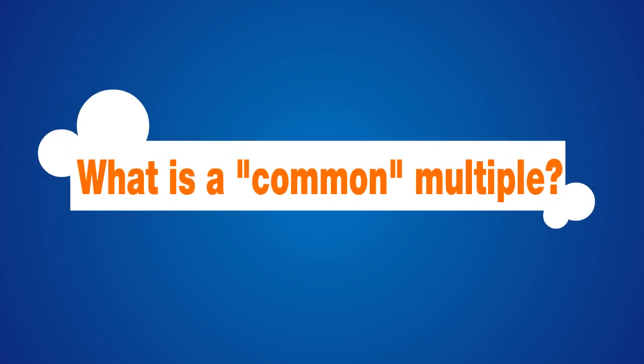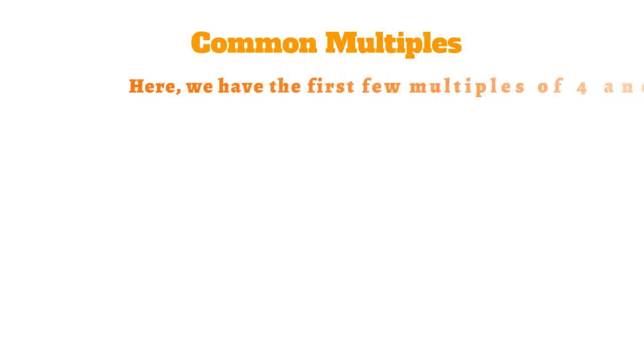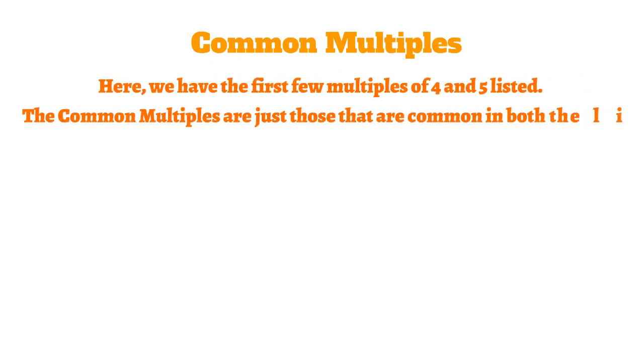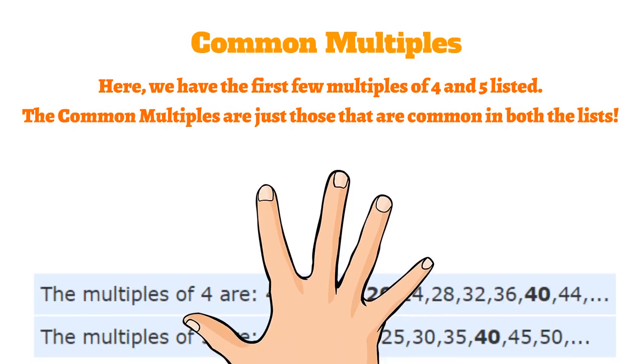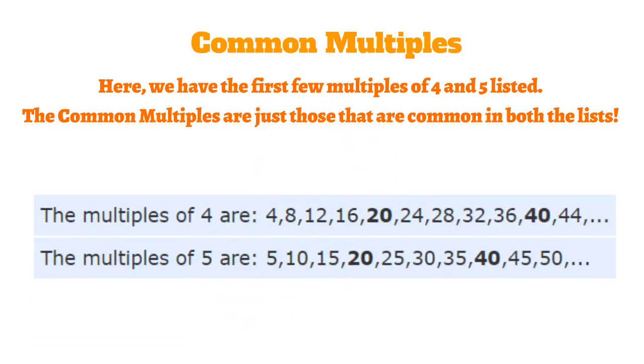But wait, what is a common multiple? Here we have the first few multiples of 4 and 5 listed. The common multiples are just those that are common in both the lists. In the below lists, you can see that the common multiples of 4 and 5 are the number 20 and the number 40.